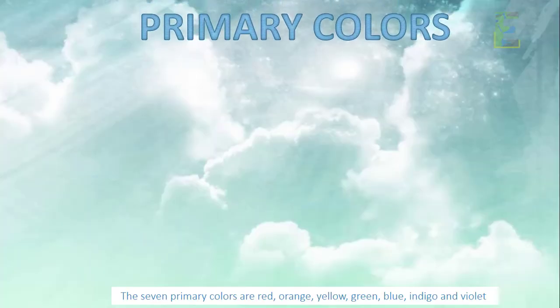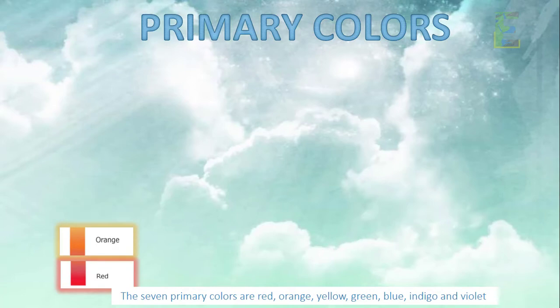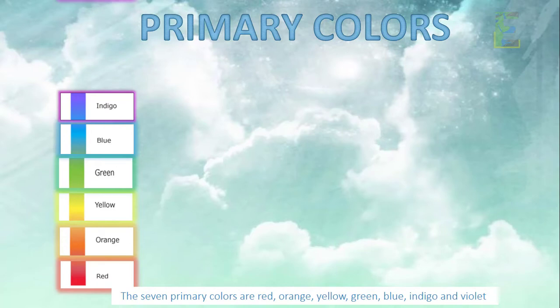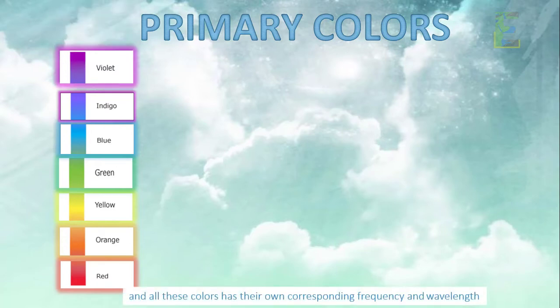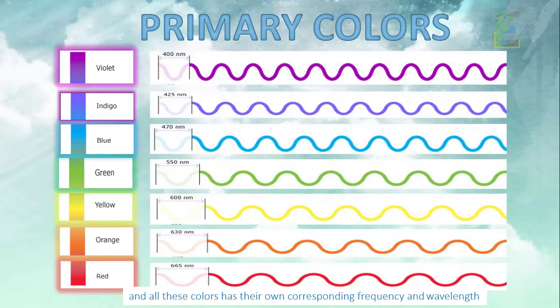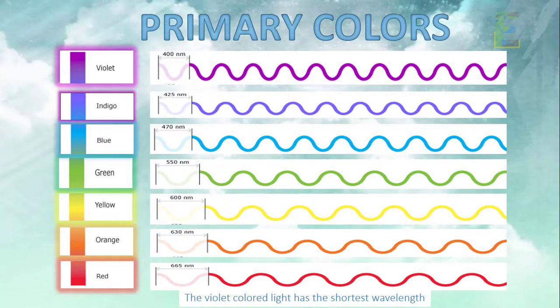The seven primary colors are red, orange, yellow, green, blue, indigo, and violet. And all these colors have their own corresponding frequency and wavelength. The violet colored light has the shortest wavelength and the red colored light has the largest wavelength.